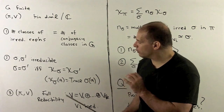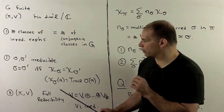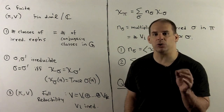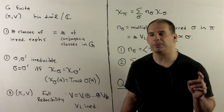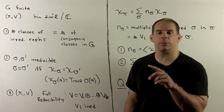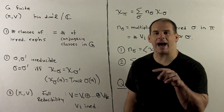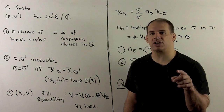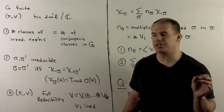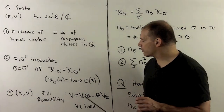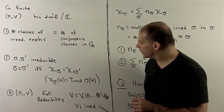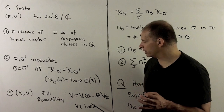With that, we can return to the question of full reducibility. We let pi V be a general unitary representation of G. Full reducibility says we can decompose pi as an orthogonal direct sum of irreducible sub-representations. So we write V as a direct sum V1 through Vk, where each V sub i is irreducible.